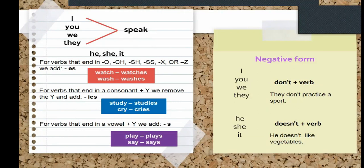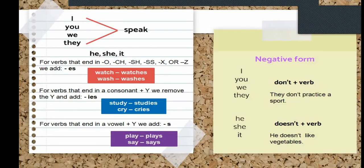So these are the rules so you can know how to add the letter S. When you have a verb that ends in O, CH, SH, double S, X, or Z, you are going to add E-S. For example, watch ends with CH, so you don't only add S — you also add the letter E, and now it is watches. He watches, she watches, it watches.